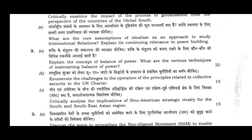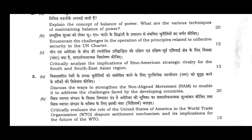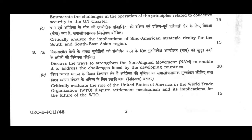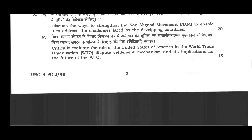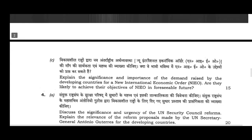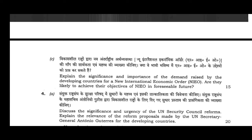Question 3(a): Discuss the ways to strengthen the Non-Aligned Movement to enable it to address the challenges faced by the developing countries. (20 marks). Question 3(b): Critically evaluate the role of the United States of America in the World Trade Organization dispute settlement mechanism and its implications for the future of the WTO. (15 marks). Question 3(c): Explain the significance and importance of the demand raised by the developing countries for a New International Economic Order (NIEO). Are they likely to achieve their objectives of NIEO in the foreseeable future? (15 marks).